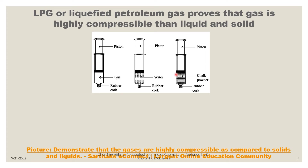Take three syringes and close the tip of each. The first syringe is empty, so it contains air — a mixture of gases. In the second syringe, take some water. In the third syringe, take any solid, like sand. When you press the piston of the first syringe, it moves easily inside. For the liquid syringe, you have to press it more strongly. For the solid syringe, it is really difficult to press the piston. This simple experiment proves that gas is more compressible than liquid and solid.